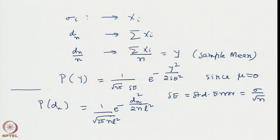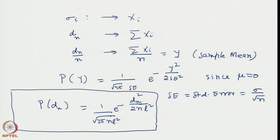By mapping with respect to this, a distribution from y can easily be converted to d_n, because y equals d_n divided by n. So a distribution function can be mapped onto a distribution of a quantity that is a product of another constant n. We can obtain a distribution function for the displacement in n steps as (1 / sqrt(2*pi*n*L squared)) times e to the power of minus d_n squared divided by 2*n*L squared.